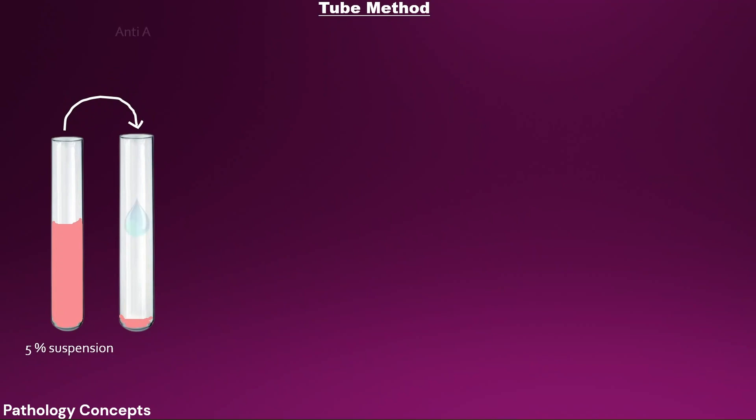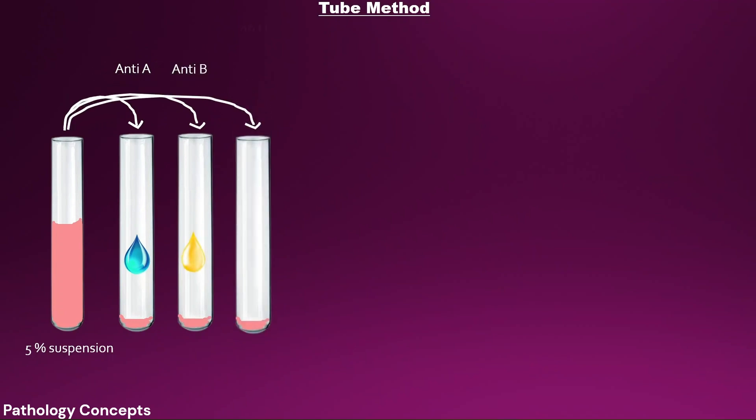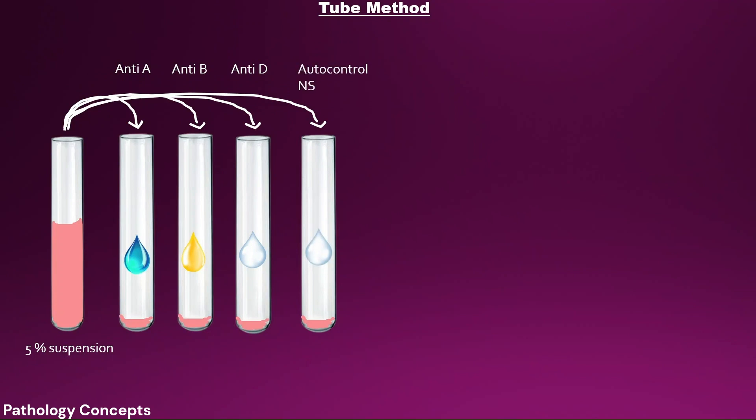From this 5% suspension, add 1 drop of cells in 4 new plain test tubes. In the first test tube, add 1 drop of anti-A sera. In the second test tube, add 1 drop of anti-B sera. In the third test tube, add 1 drop of anti-D sera. In the fourth test tube, keep it as an auto-control and add 1 drop of saline. This part is called forward grouping.